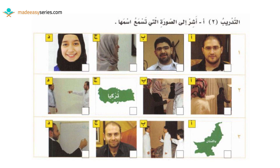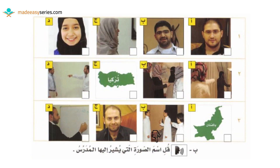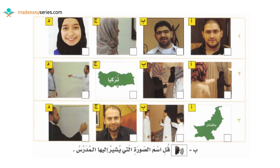التدريب الثاني: أشر إلى الصورة التي تسمع اسمها. أولاً: أخت. ثانياً: أنت. ثالثاً: مدرس. Now let's go over the answers. Number one is picture جيم, which is the word أخت. Number two is picture Hamza, which is أنت. Number three is picture دال, which is مدرس. The next exercise asks you to say the name of the picture the teacher is pointing to, but since I cannot hear you, we're going to skip that exercise.